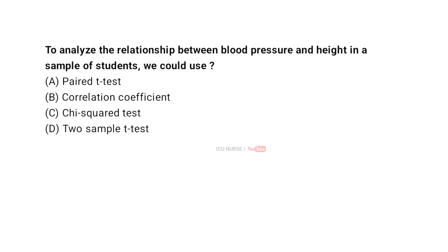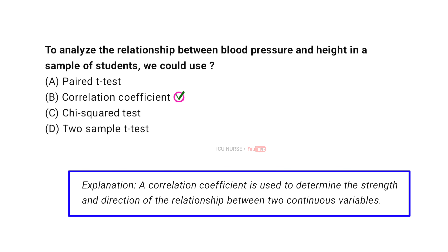To analyze the relationship between blood pressure and height in a sample of students, we could use a correlation coefficient. A correlation coefficient is used to determine the strength and direction of the relationship between two continuous variables.